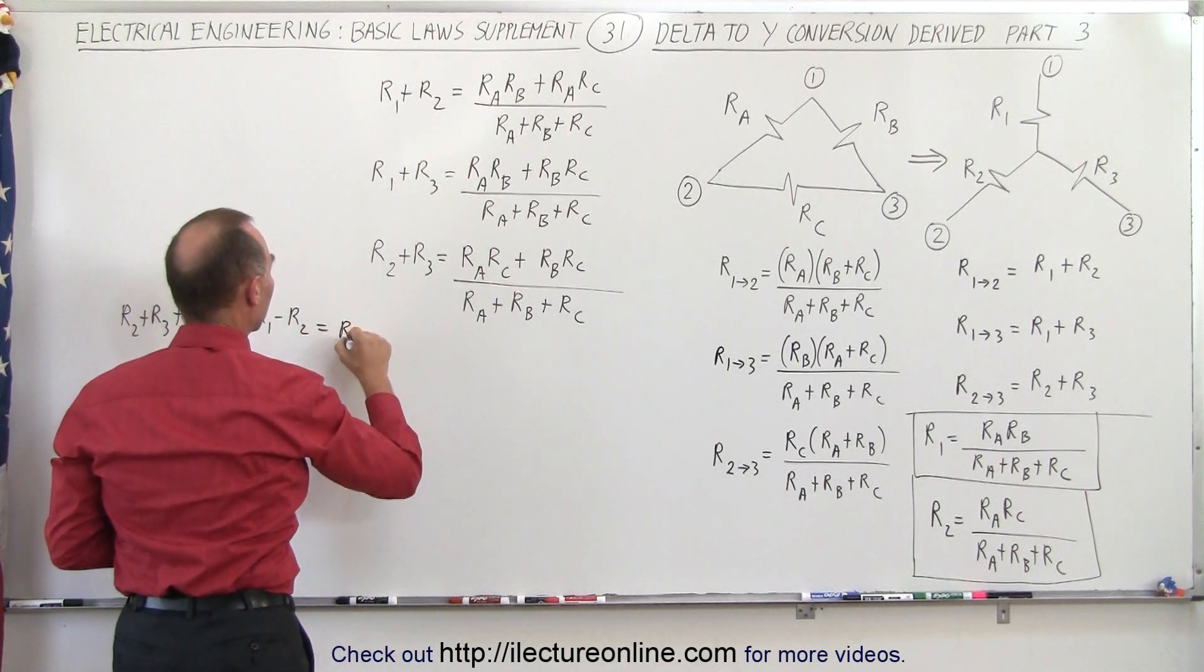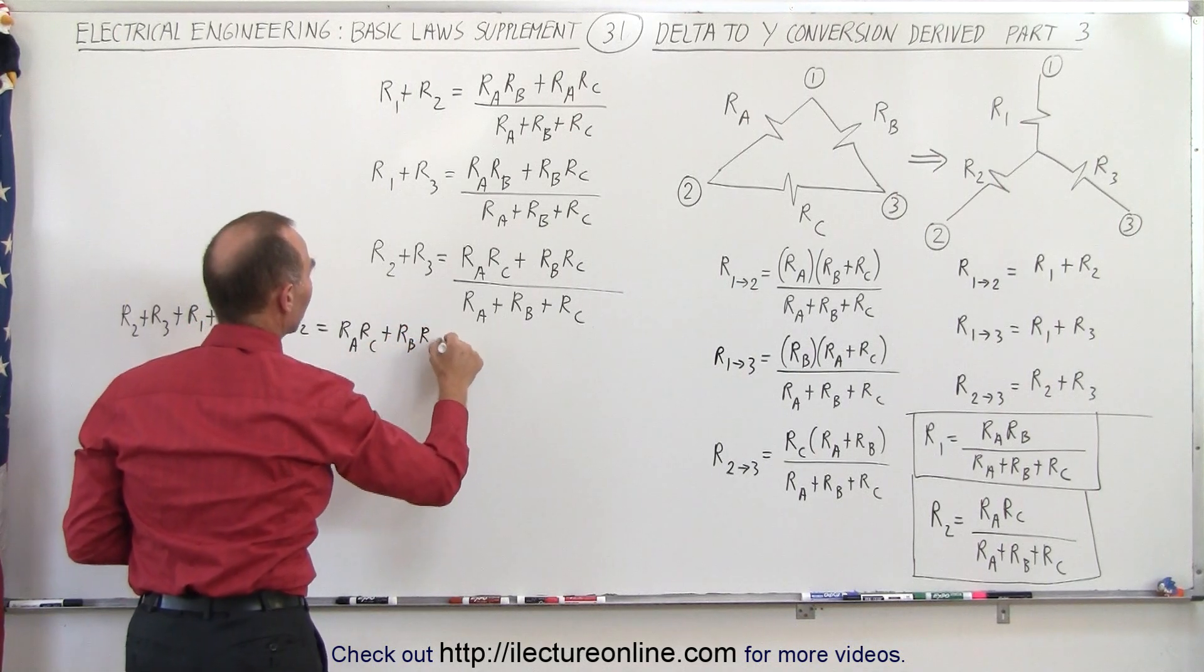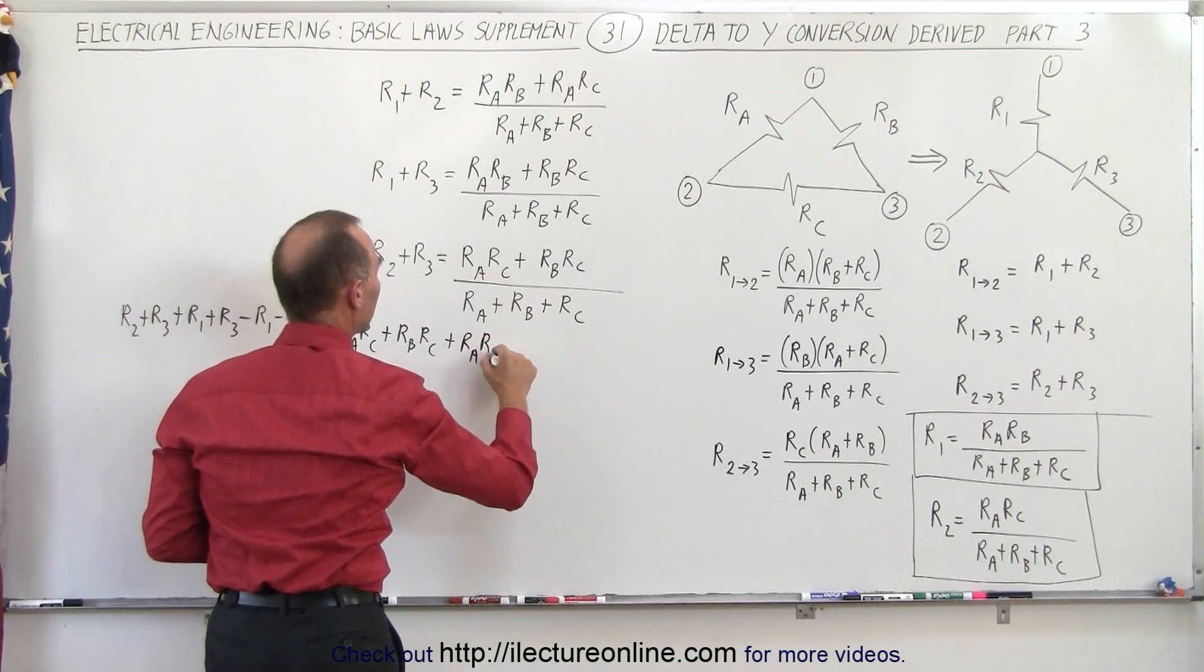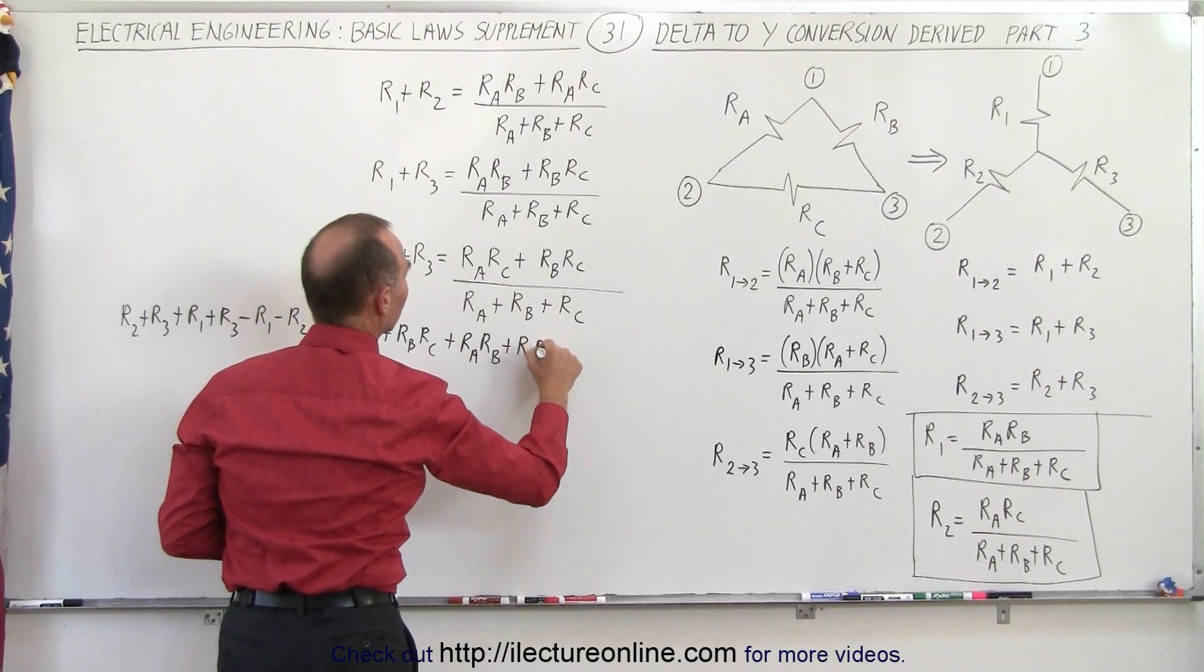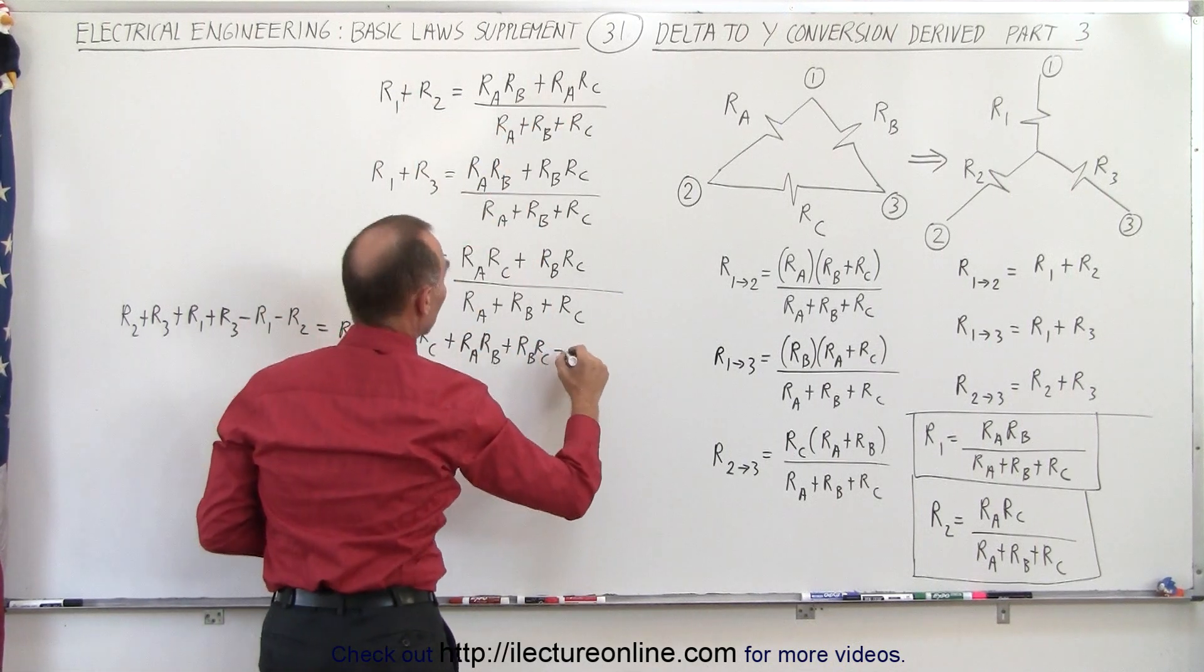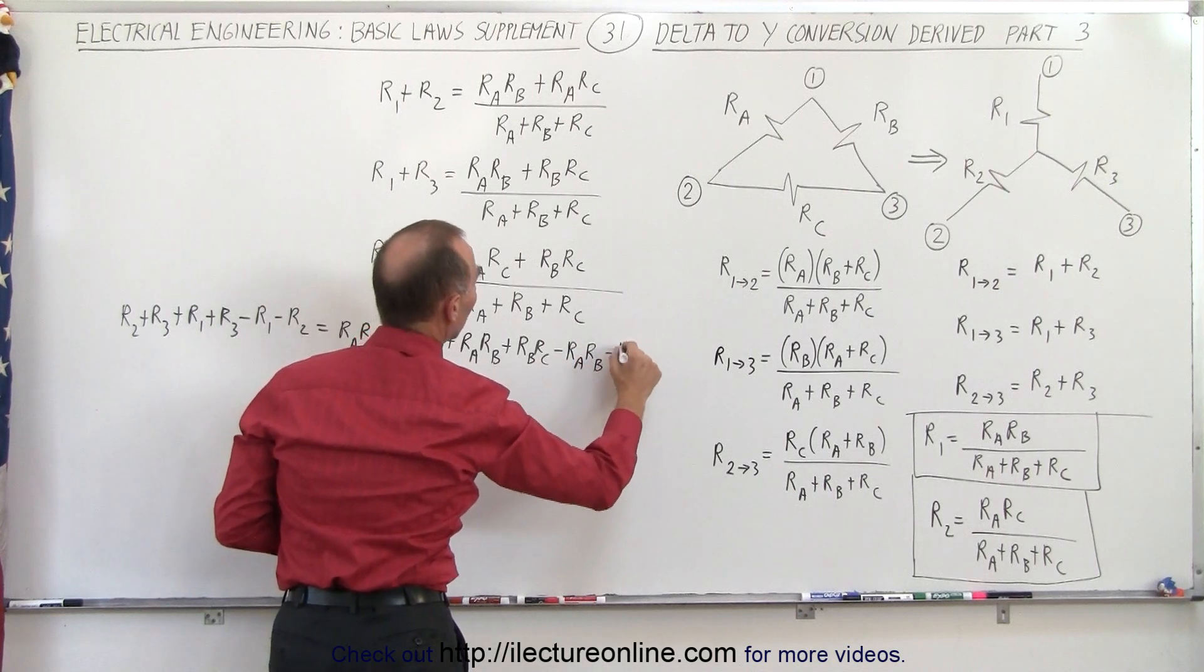So we end up with RA times RC plus RB times RC, add those together so we have RA RB plus RB RC, and finally we're going to subtract the top portion so minus RA RB minus RA times RC.